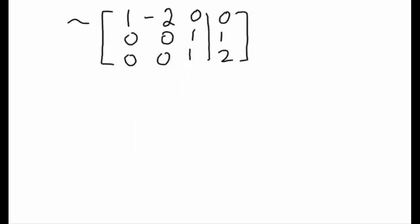After performing that row operation, we can confirm the first column is complete — we have our leading one with zeros beneath it. Moving to column two, the only non-zero number is in row one. We can't move it down without affecting that leading one. So we skip over column two and go to column three, where our next candidate for a leading one is below and to the right of the first leading one.